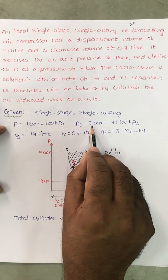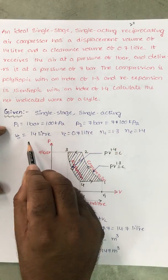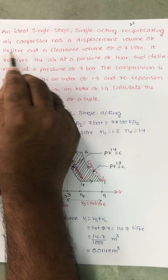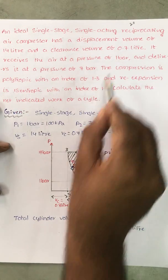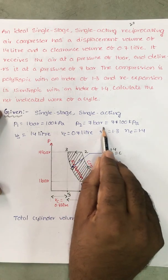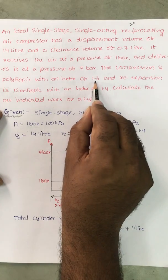1 bar means 100 kilopascal, 7 into 100 kilopascal. Vs is 14L and clearance volume Vc is equal to 0.7L. Compression index is 1.3.